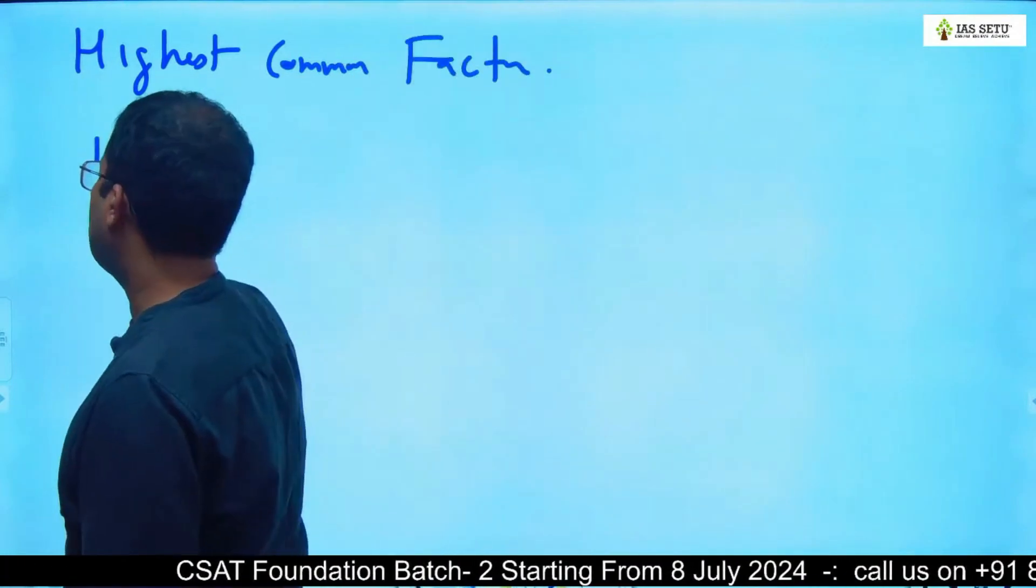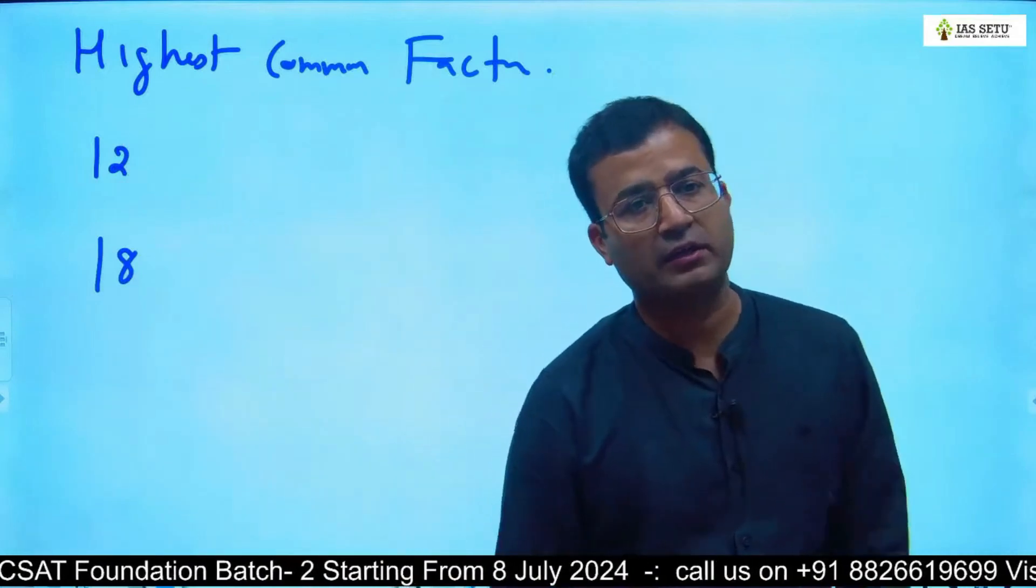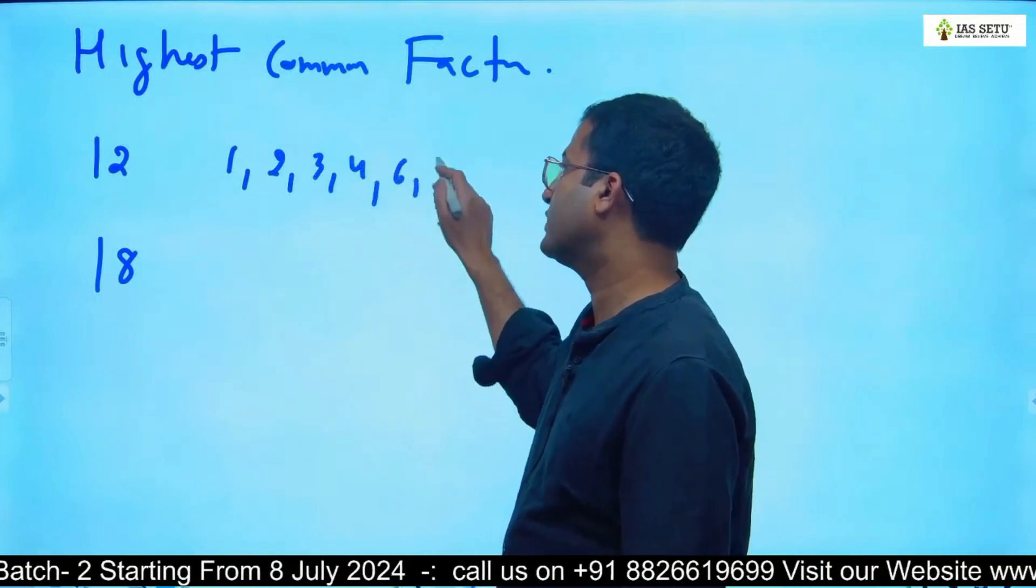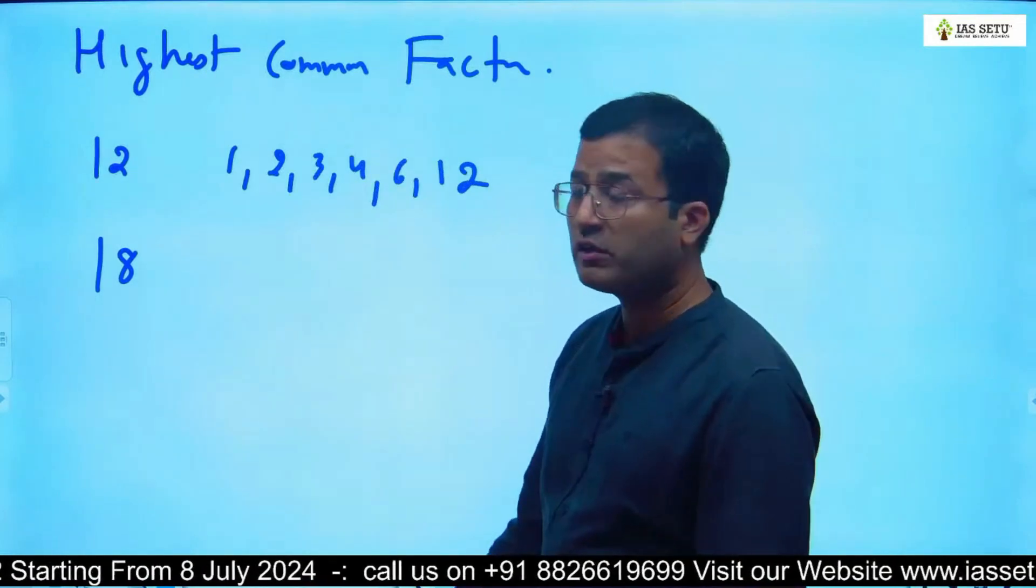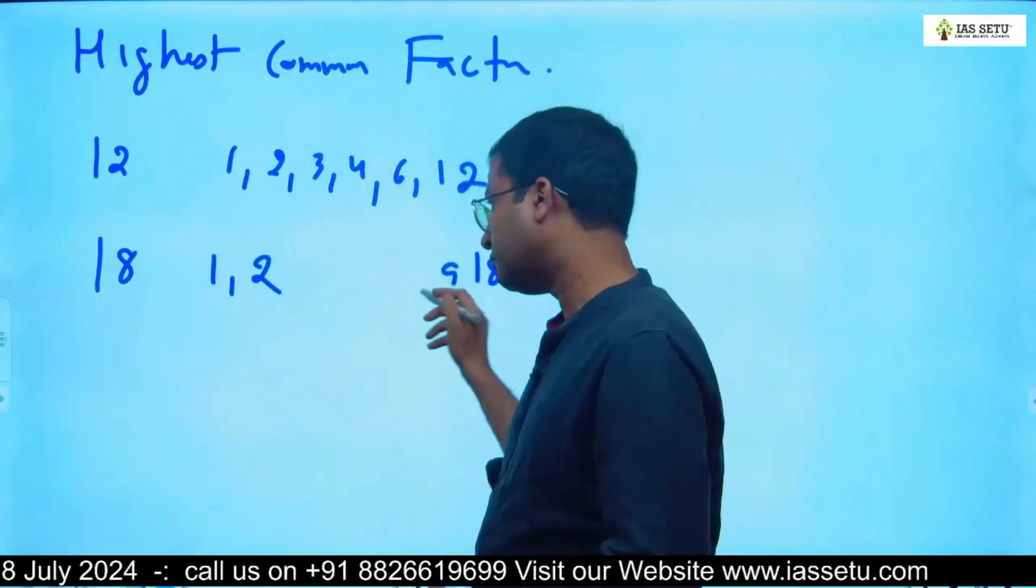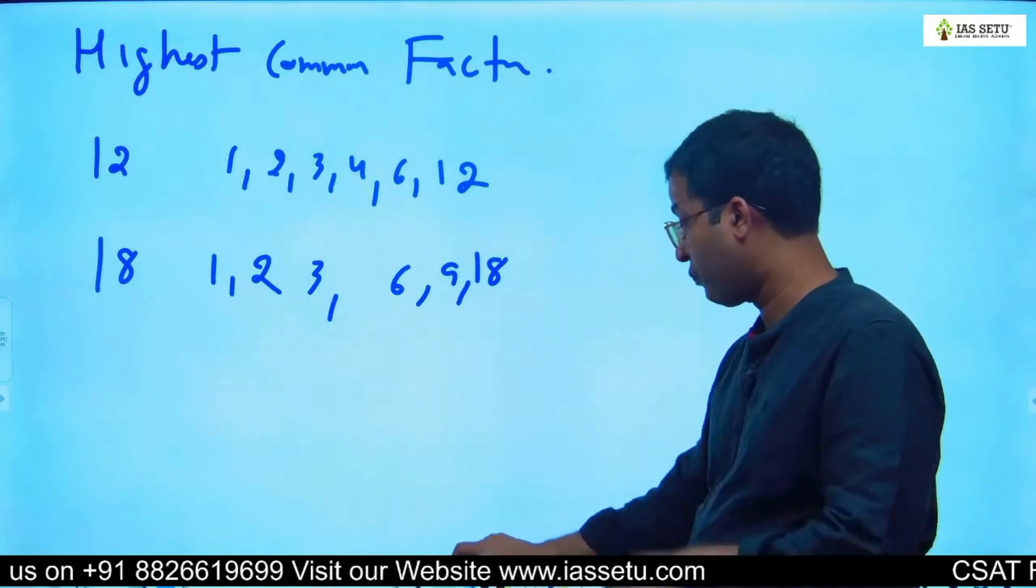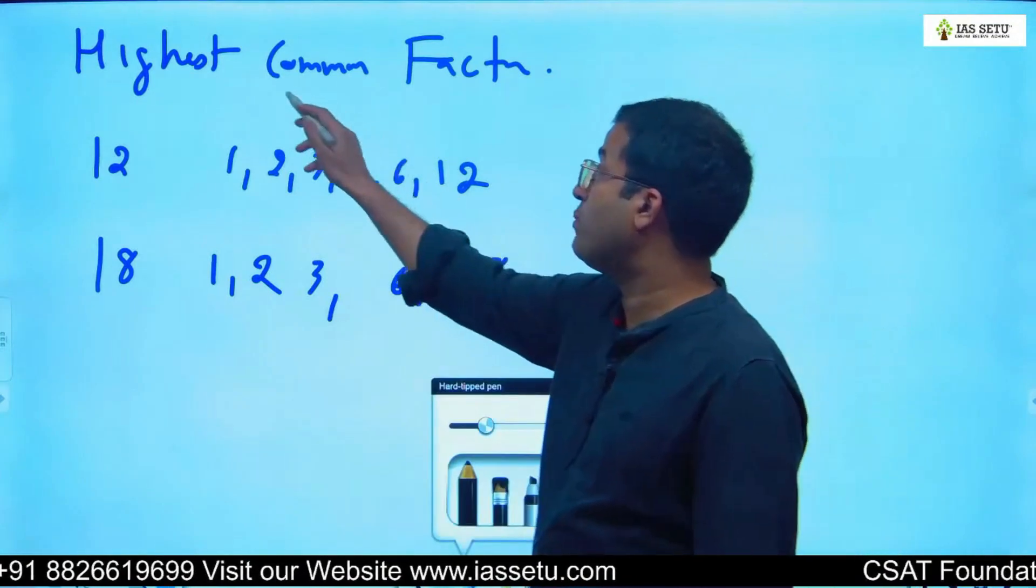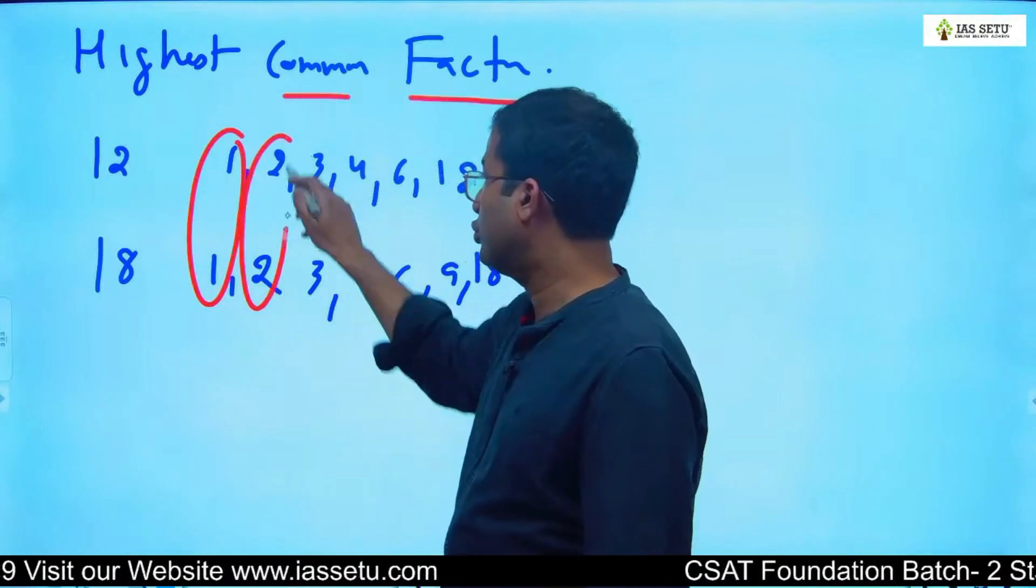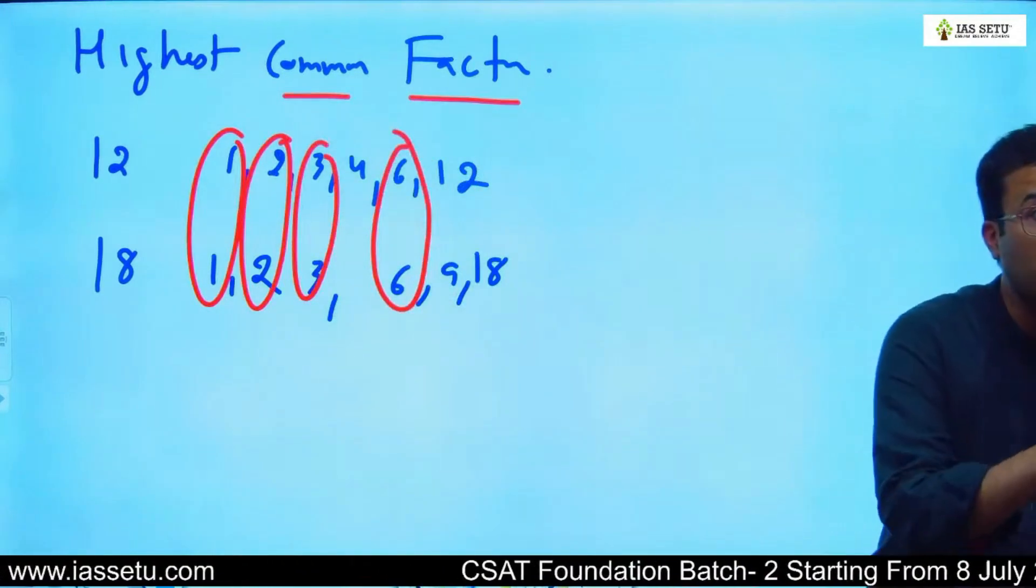I take an example like 12 and 18. We will take factors. What are the factors of 12? 1, 2, 3, 4, 6, 12. What are the factors of 18? 1, 2, 3, 6, 9, 18. What here is common factor?